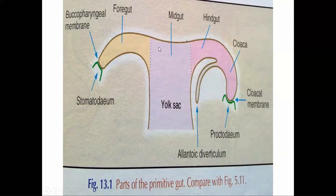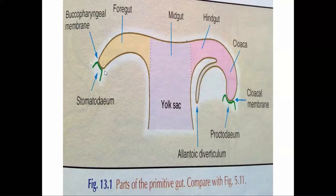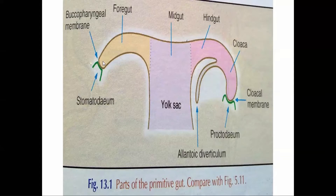The primitive gut is divided into three parts from cranial to caudal: the foregut, midgut, and hindgut. The midgut is connected with the yolk sac via the vitelline duct. The part cranial to the midgut is the foregut and caudal to the midgut is the hindgut. Cranially, the foregut is continuous with the stomodeum via the buccopharyngeal (oropharyngeal) membrane, and caudally the hindgut is continuous with the proctodeum. The junction between the hindgut and the proctodeum is the cloacal membrane.